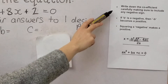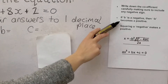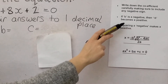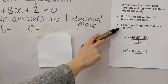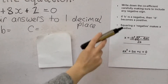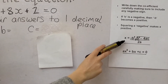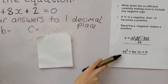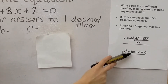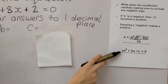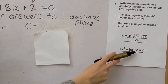The second part says if b is negative, then negative b becomes a positive. And a square of a negative makes a positive. The actual formula itself is x equals negative b plus or minus the square root of b squared minus 4ac all over 2a, in the format ax squared plus bx plus c, where the first number term is a, the second is b, and the third is c.